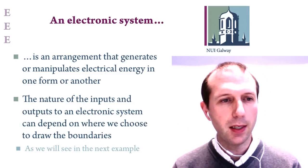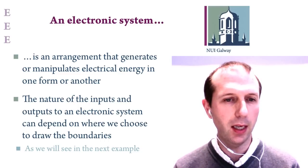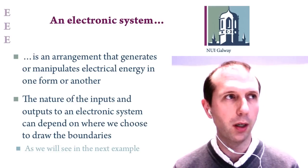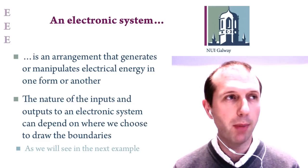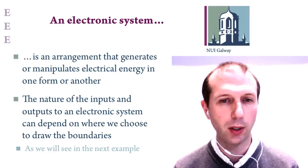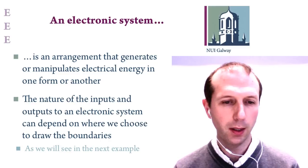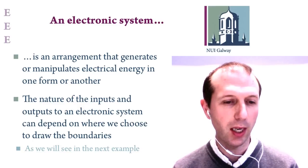An electronic system is a type of engineering system in that it's an arrangement that generates or manipulates electrical energy in one form or another. You can think of the inputs mainly as voltages or currents coming into the system, and within that box the system manipulates and modifies that electrical energy into another form for some other system. Depending on where we draw the boundaries, the nature of the inputs and outputs will change.